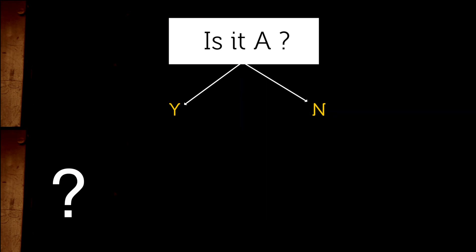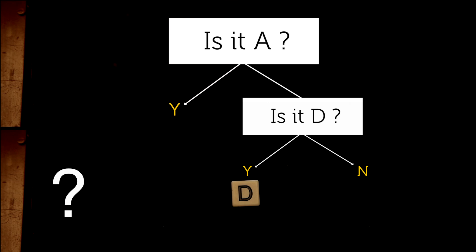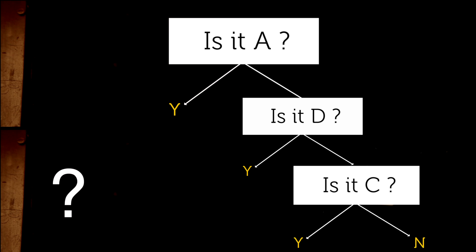Otherwise, we are left with two equal outcomes: D or B and C. So we could ask, is it D? If yes, we are done with two questions. Otherwise, we have to ask a third question to identify which of the last two symbols it is.